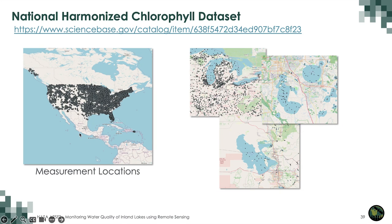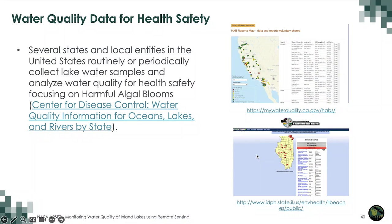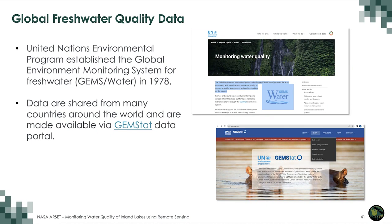Here is an example of the National Harmonized Chlorophyll Dataset showing measurement locations and a zoomed-in view of chlorophyll measurements available in lakes. The Centers for Disease Control also have water quality information for oceans, lakes, and rivers by state. Several states and local entities in the US routinely or periodically collect lake water samples and analyze water quality for health safety, focusing on harmful algal blooms. The data are mostly for harmful algal blooms.